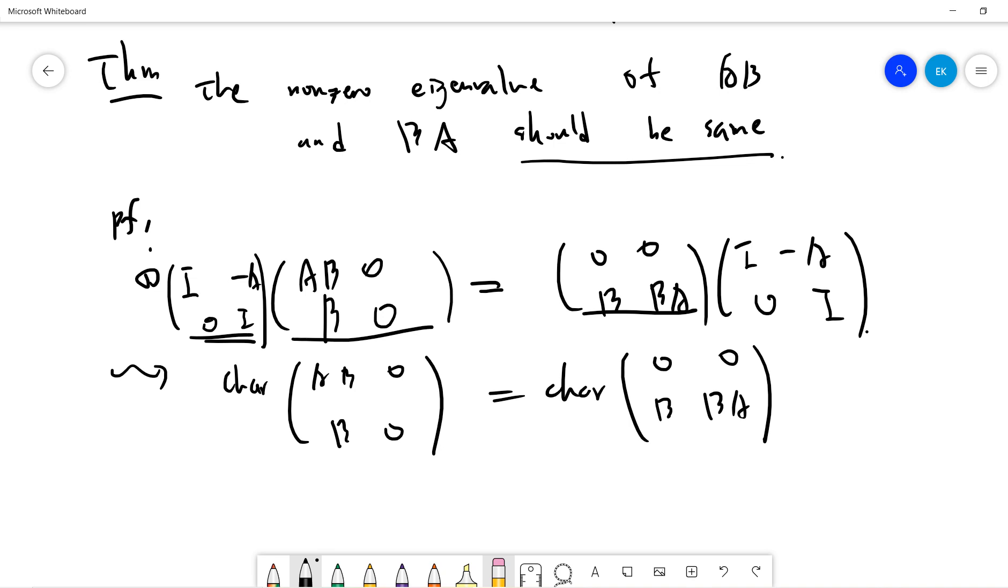Since there's zero, the characteristic polynomial can only differ at the part of zero. If there's a zero, then the non-zero part will be the same. So AB will be same as BA for a non-zero eigenvalue.